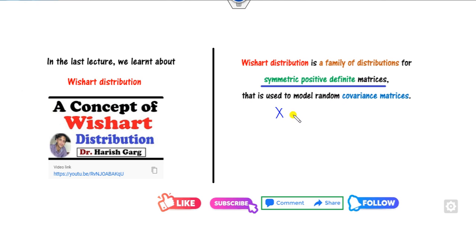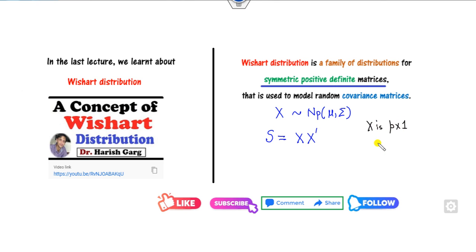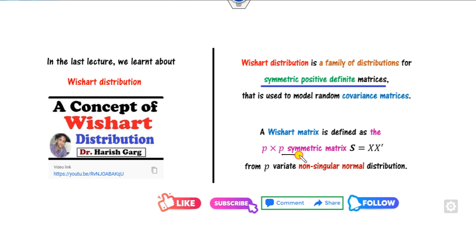If you have a capital X which follows the multivariate normal distribution, then you can define the matrix capital S which is defined by X into X transpose. Remember, X is your P×1 matrix, so X transpose is your 1×P matrix. Therefore, X into X transpose will be your P×P matrix. If you consider all those P×P matrices, then the matrix defined — capital S — is called the Wishart matrix.